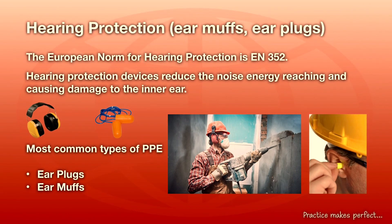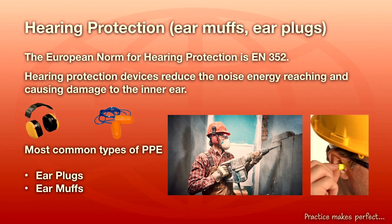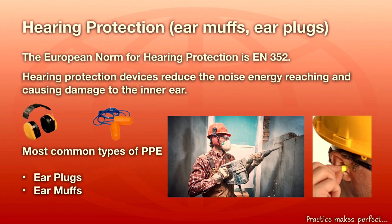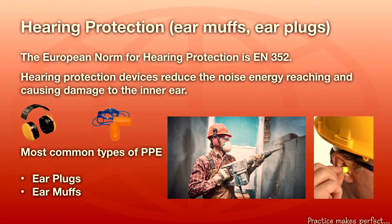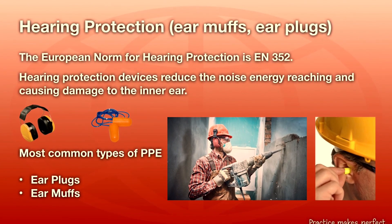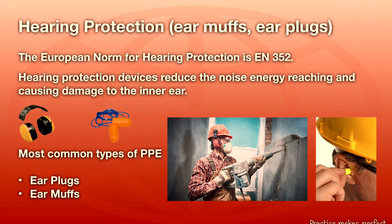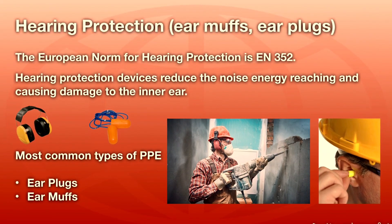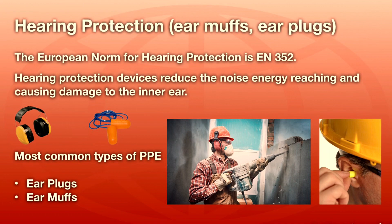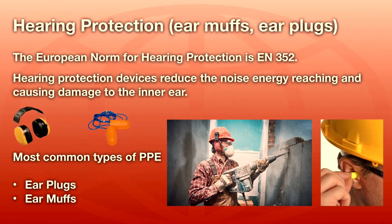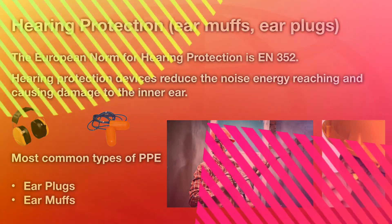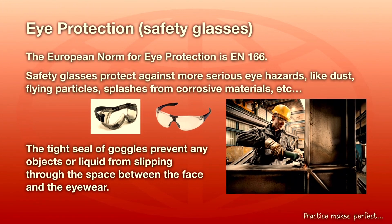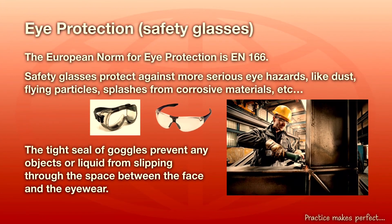Hearing protection: the European norm for hearing protection is EN352. Hearing protections are used to protect the inner ear while working in a noisy environment. The most common types of PPE are ear plugs and earmuffs.